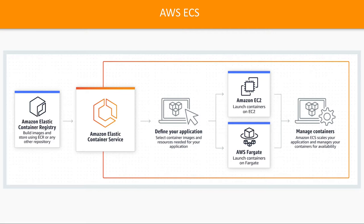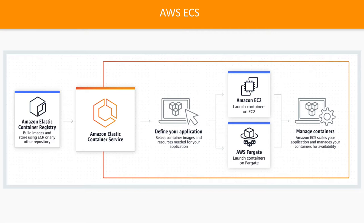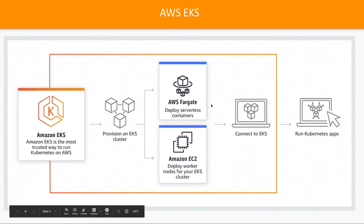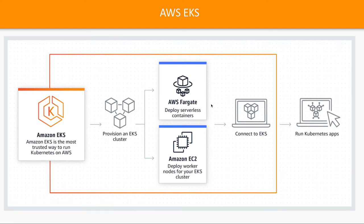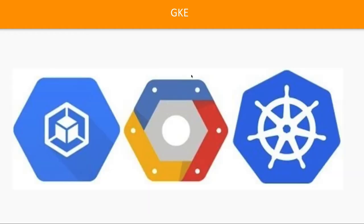Similarly, if you want to use a Kubernetes cluster, there is EKS — Elastic Kubernetes Service. You can actually create master and worker nodes. You can provision an EKS cluster on AWS either using Fargate or EC2 instances. You can connect to this EKS cluster and run Kubernetes apps by deploying them there.